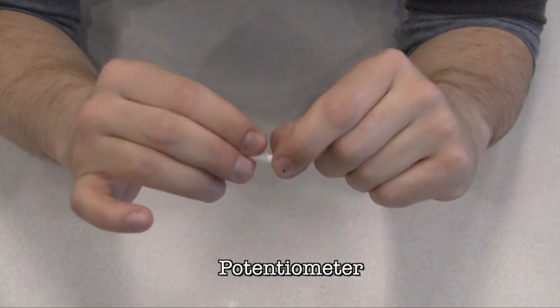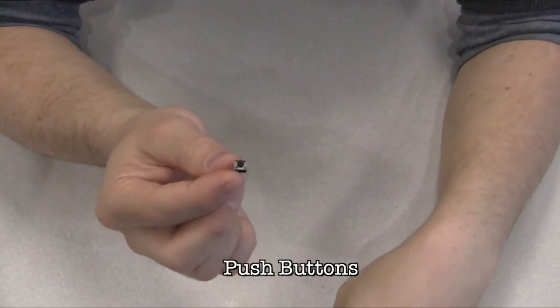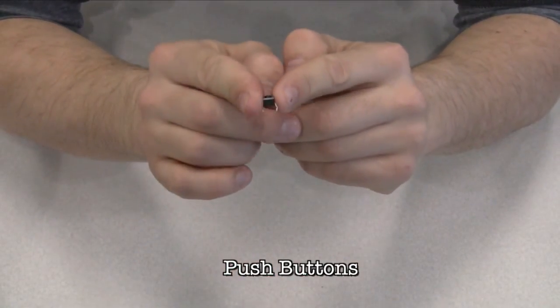Push buttons are momentary switches that close a circuit when pressed. They snap into breadboards easily, and they're good for detecting on and off signals.